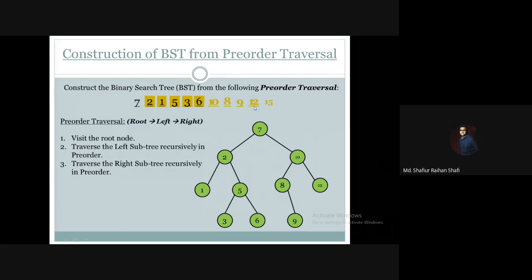Since 12 has no smaller remaining element, 15 goes to the right side of 12, just like this. So we are done inserting all the elements into the right subtree of the root 7.